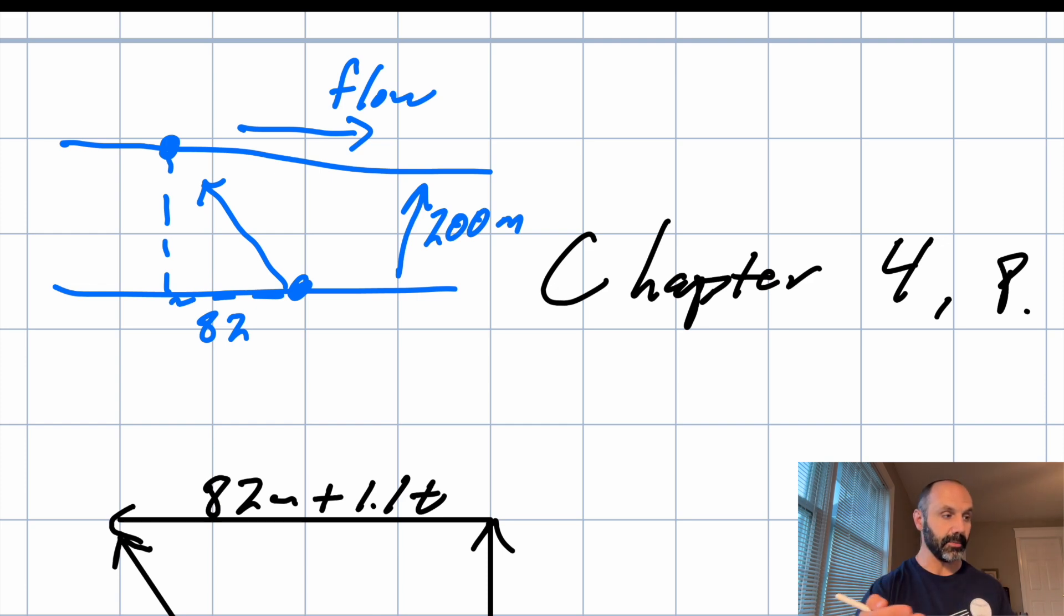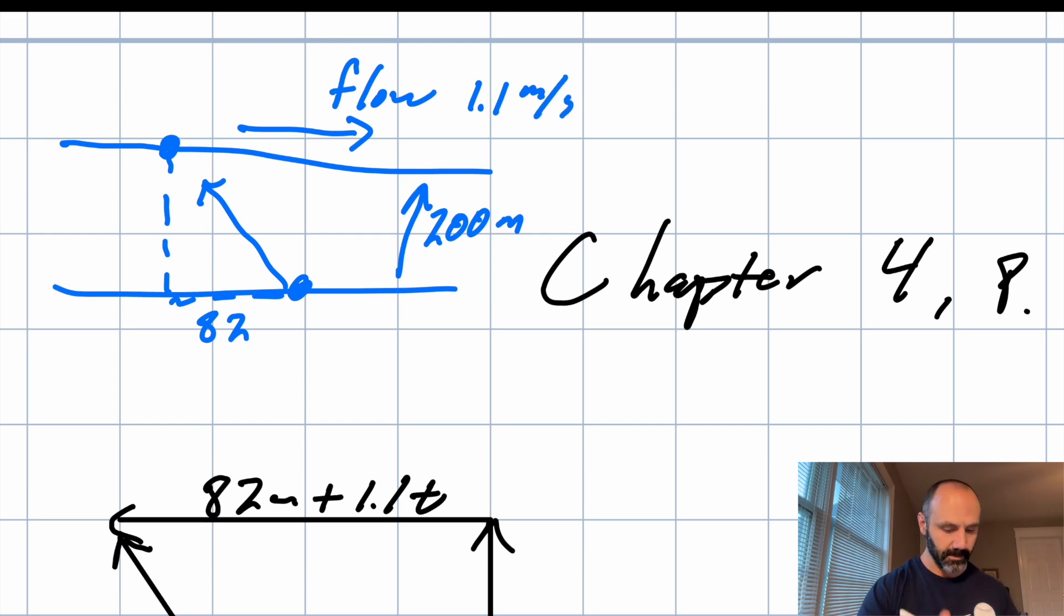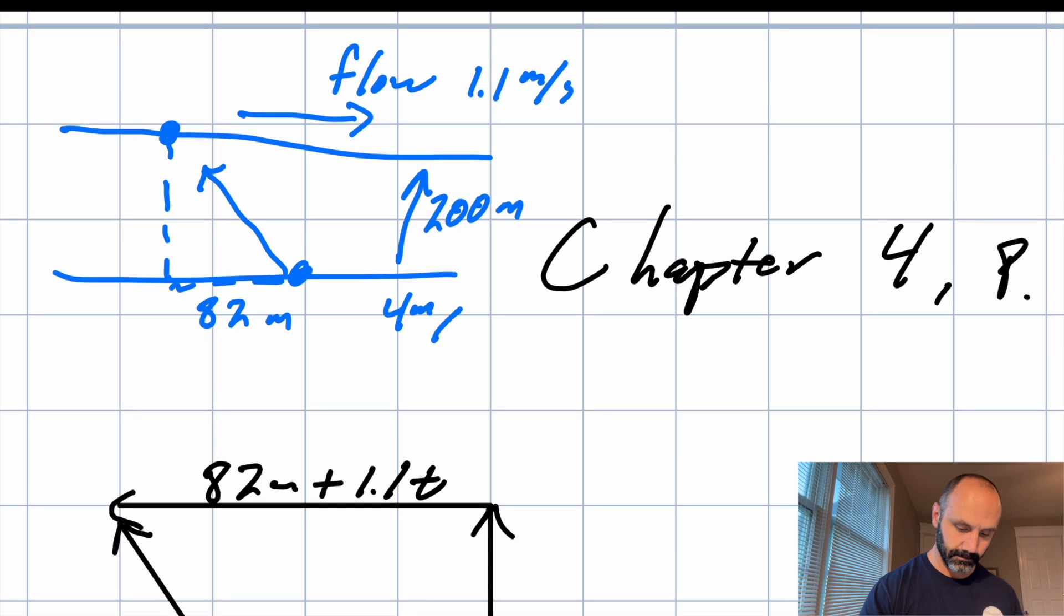And so the question is, in what direction must he point the boat? And how long will it take the boat to cross the river? So there are the other pieces of information we have. The flow is 1.1 meters per second. Again, this is 82 meters. And we know the boat can go 4 meters per second, is the V of the boat.